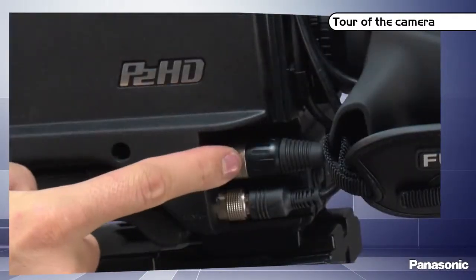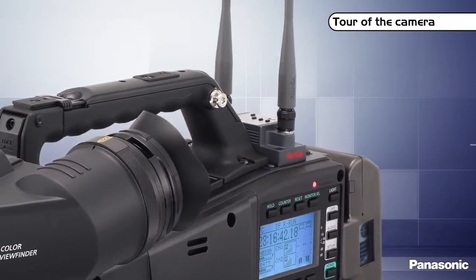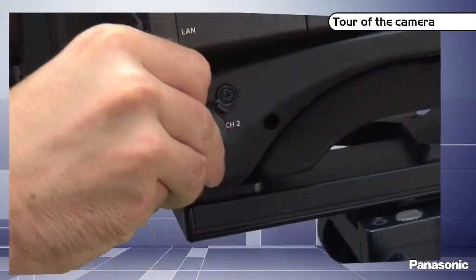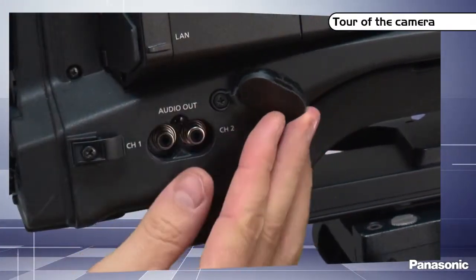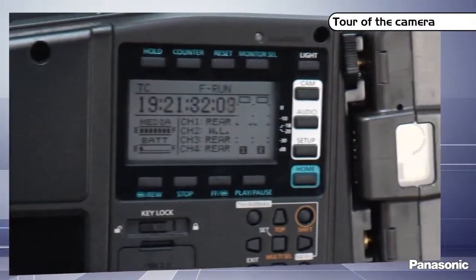For the audio part, we have an XLR at the front, one slot for a 2-channel wireless receiver. We have two XLR inputs at the rear as well as two monitoring RCA outputs. The audio levels can be set from either the front or the back of the camera.